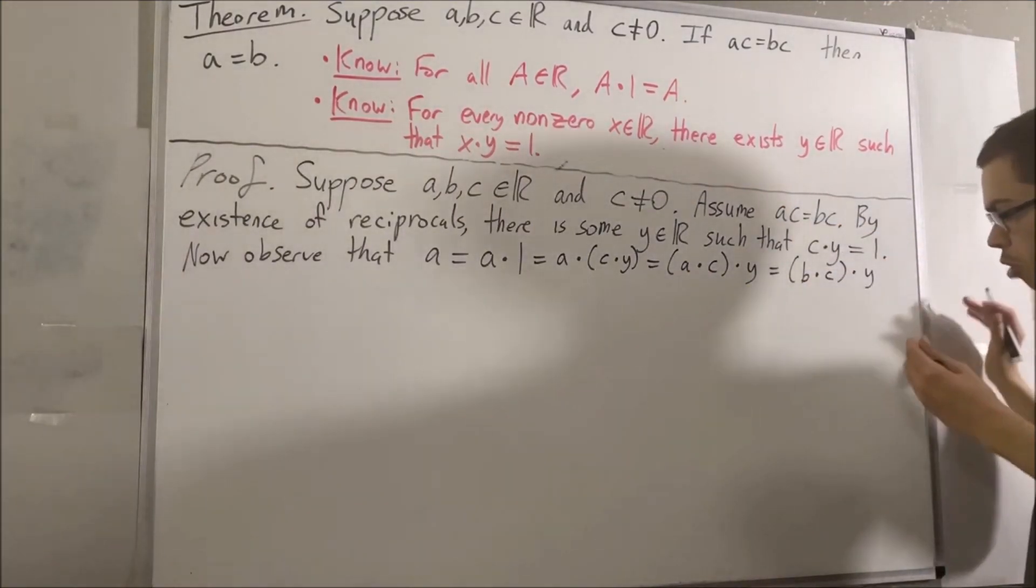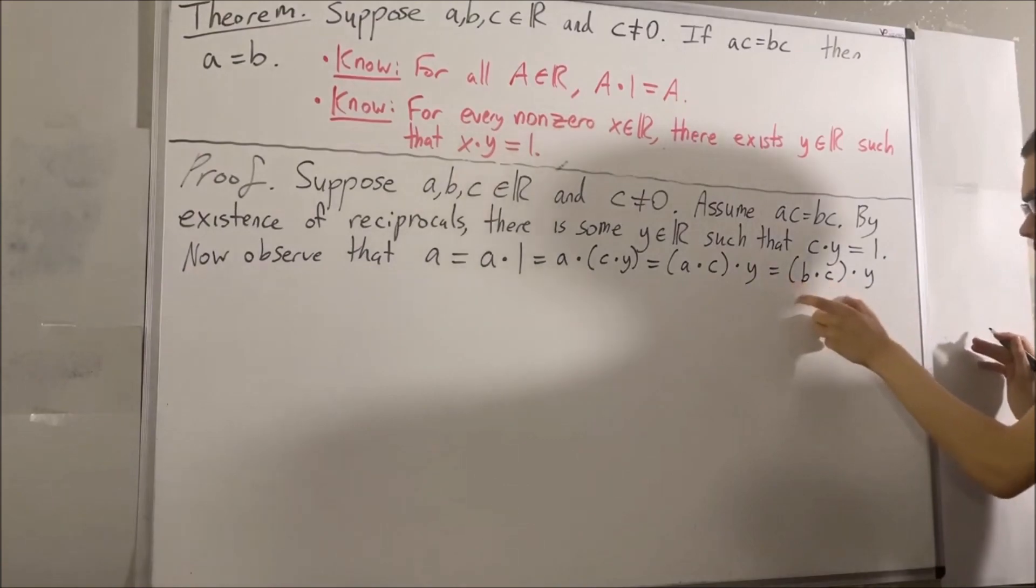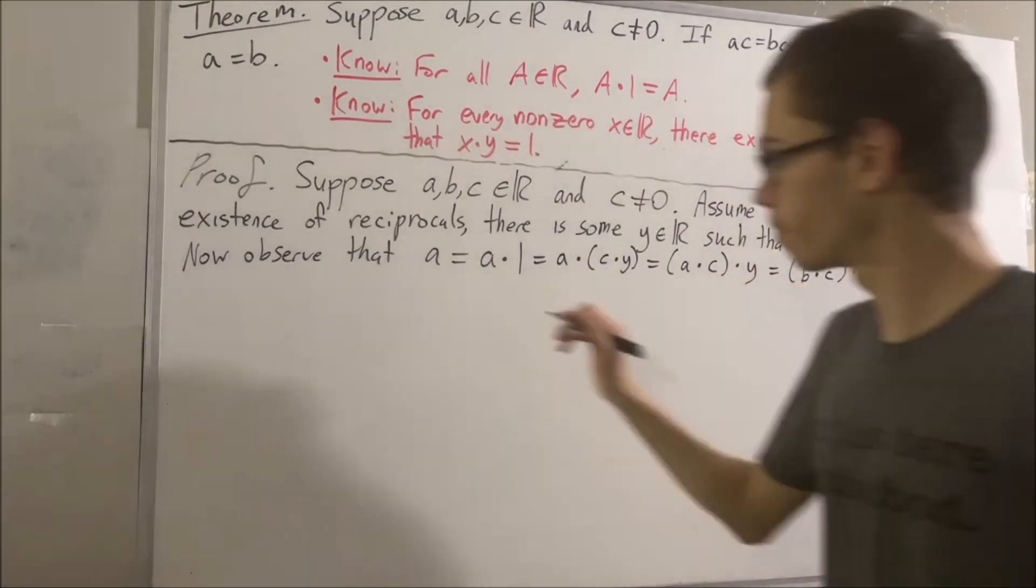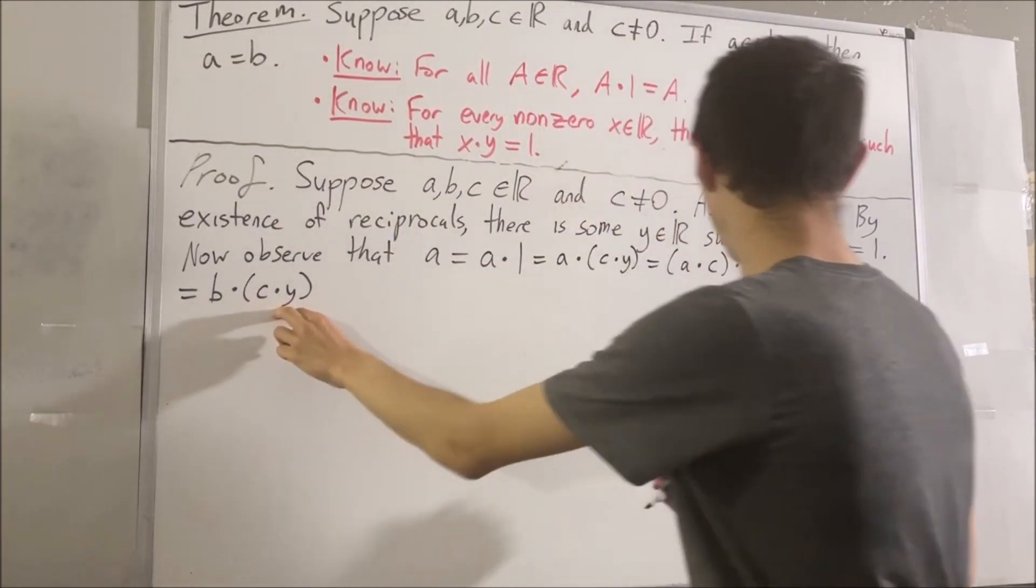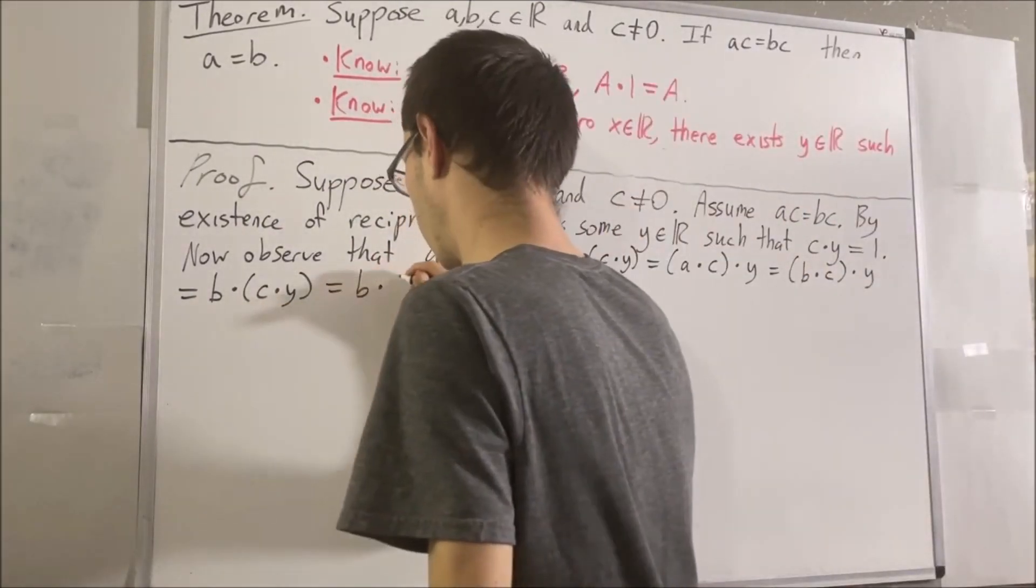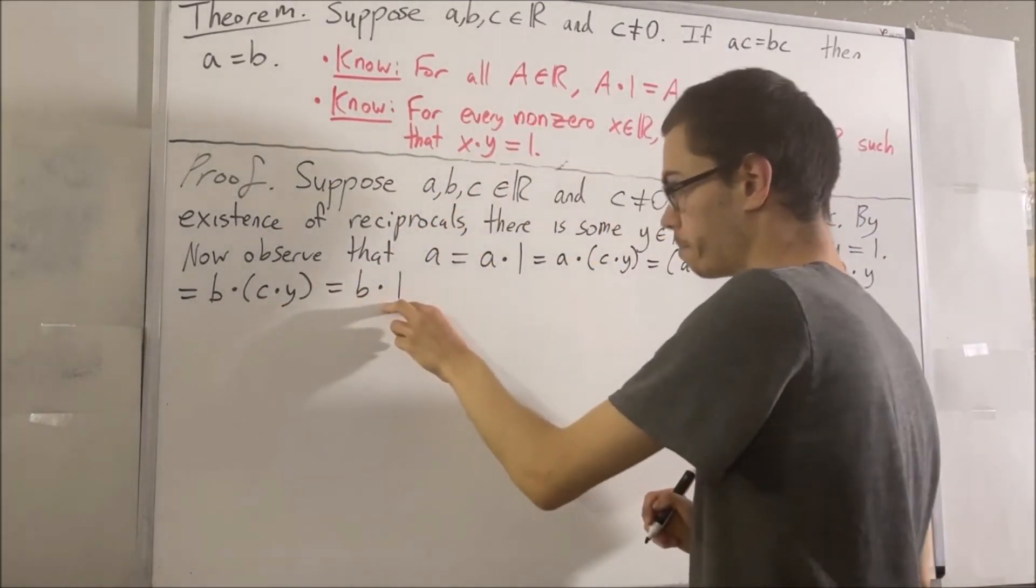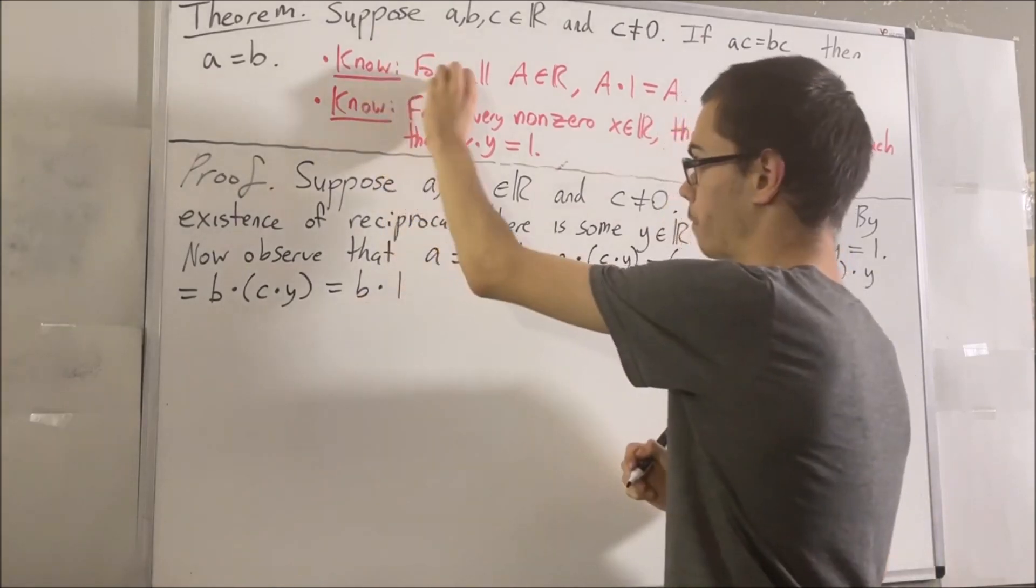Now, let's apply the associative property again to move the parentheses back to the C times Y. And again, C times Y is equal to 1. And, of course, B times 1 is equal to B by our first fact.